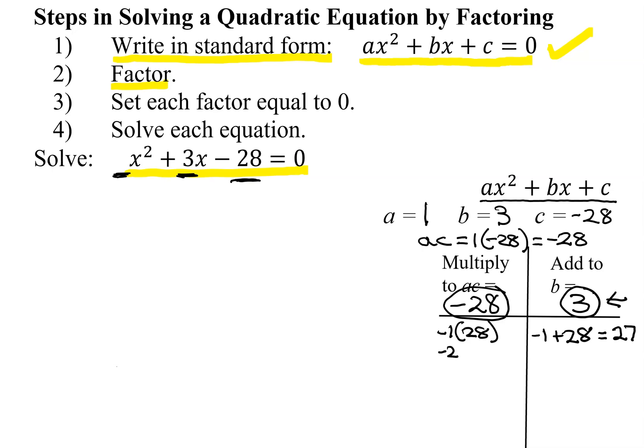Does 2 go into 28? Yes. So I have negative 2 times 14. Remember, the bigger number has to be the positive one. Negative 2 plus 14 is 12.